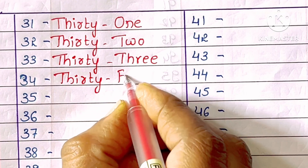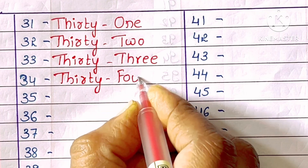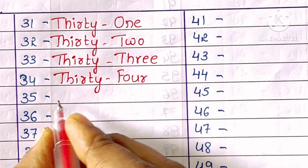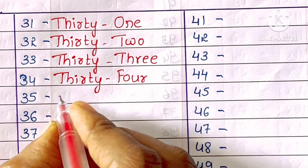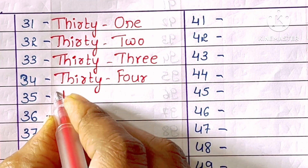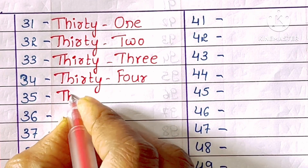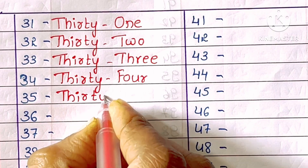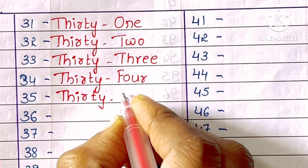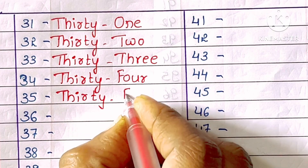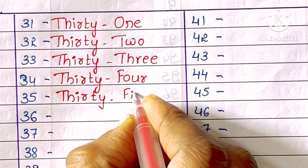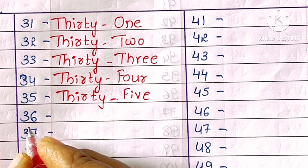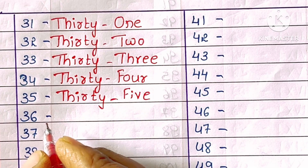34. T-H-I-R-T-Y-F-O-U-R. Thirty-four. 35. T-H-I-R-T-Y-F-I-V-E. Thirty-five.